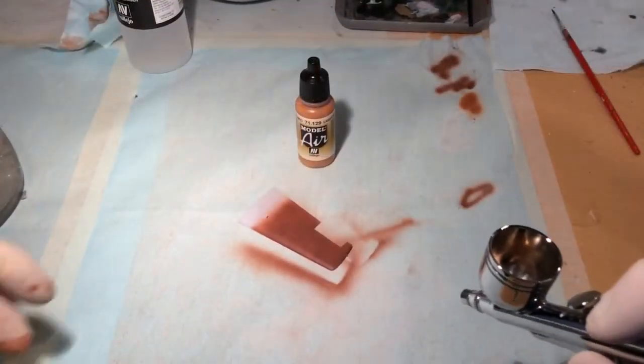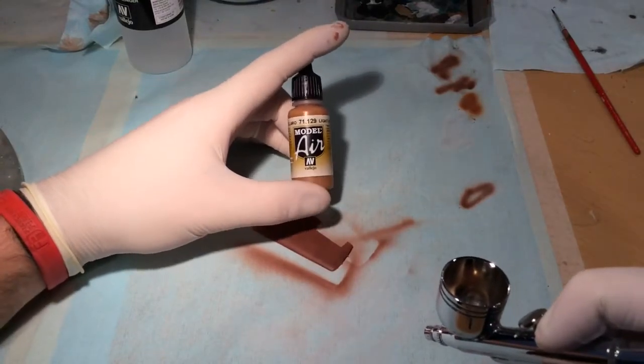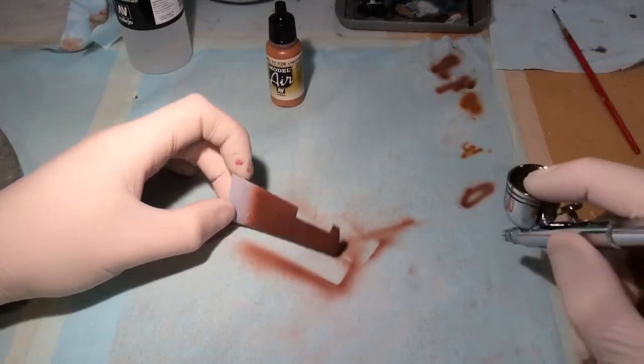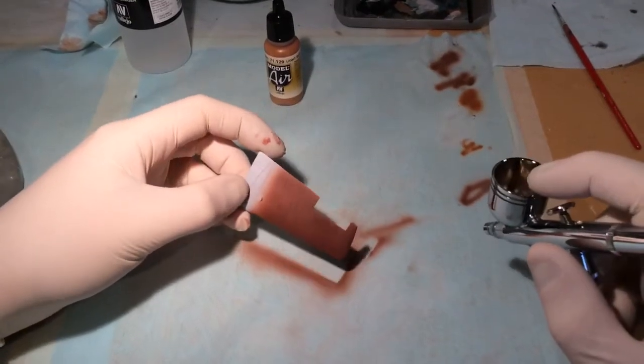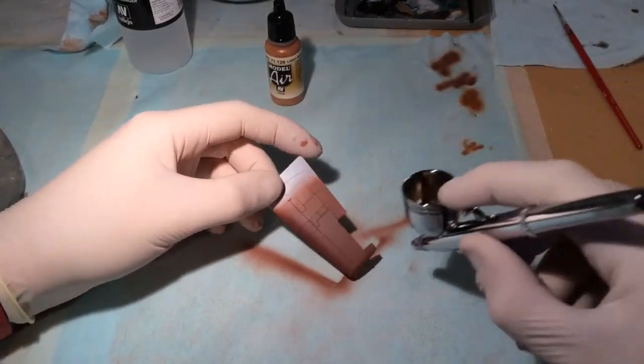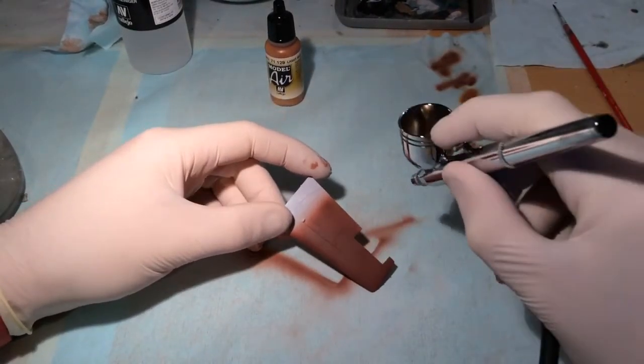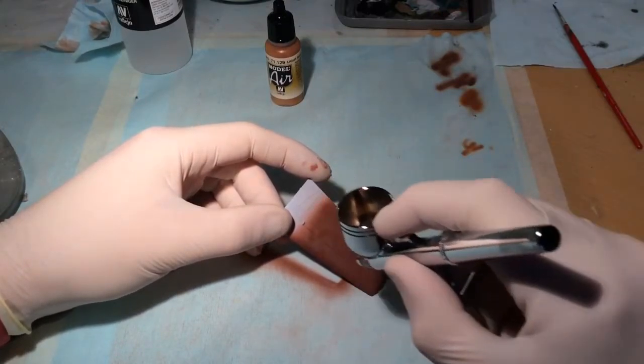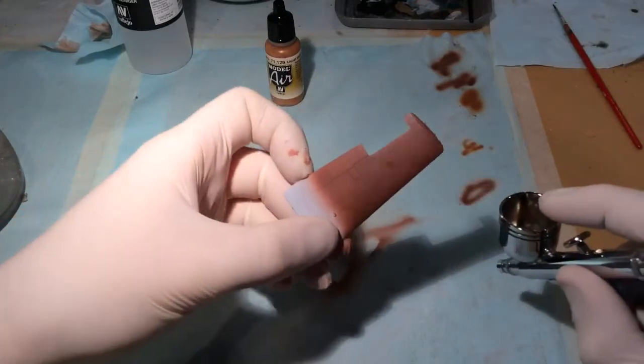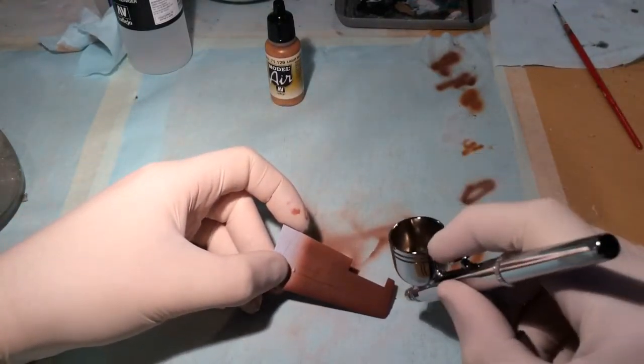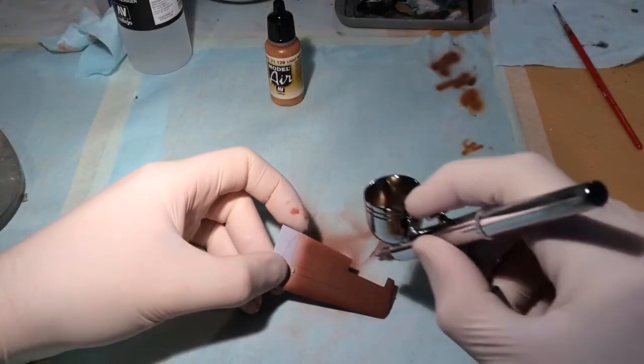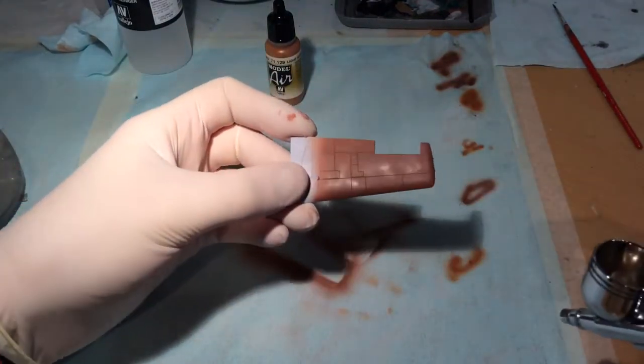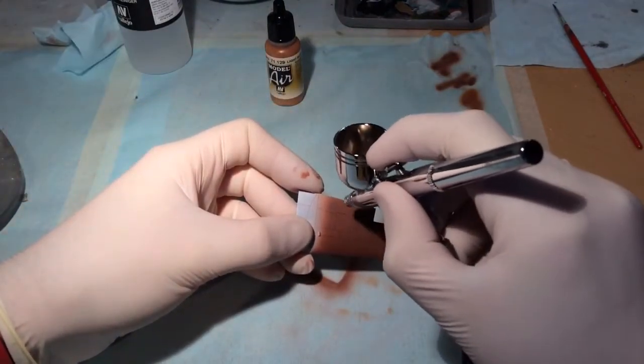The next color I'm going to be using is Vallejo 71.129 which is light rust. This is to give a difference in tone and effect on the rust because rust is not just one color. So I'm going to model this using the airbrush, we're not going to give it a solid coat. We'll do it a little bit by bit, random all over the surface.